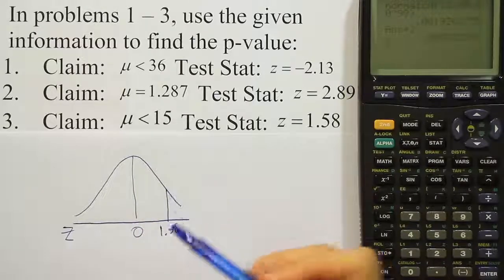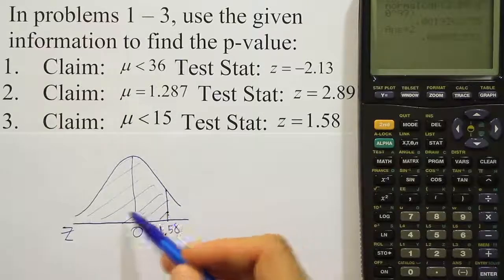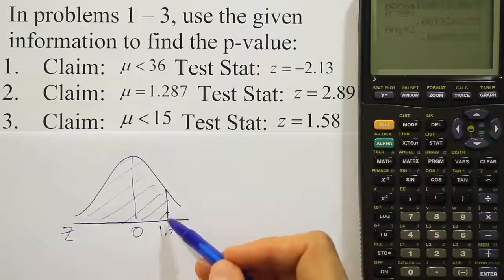And the rule says for a left-tailed test, you find the area to the left of the test statistic. So that means we need to find this area from 1.58 all the way to the left.